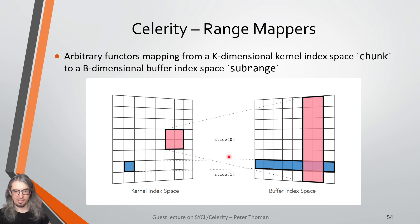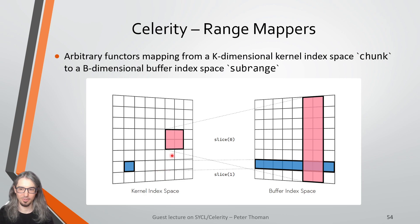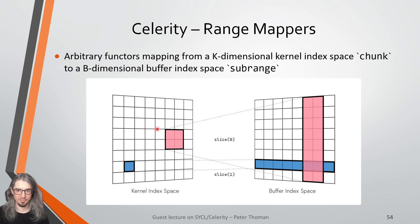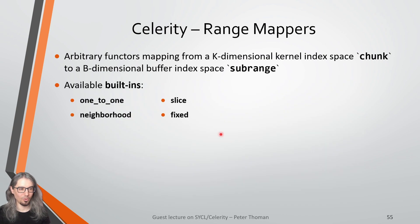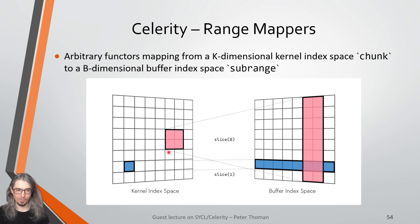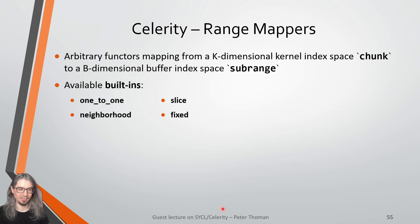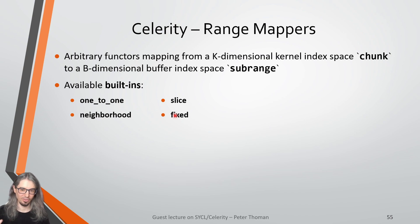A third important built-in range mapper is the slice range mapper, useful for example in matrix multiplication: it accesses the full slice in some particular dimension of a multi-dimensional buffer relating to the given chunk of the kernel index space. There's also the fixed range mapper, which disregards the kernel range and accesses some fixed area — the most common being the all range mapper, which for reads accesses the full buffer, frequently used for smaller input buffers used as input to a computation.